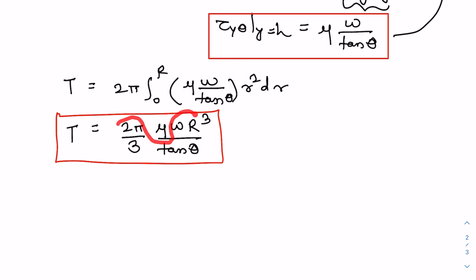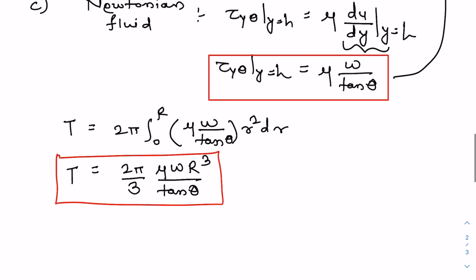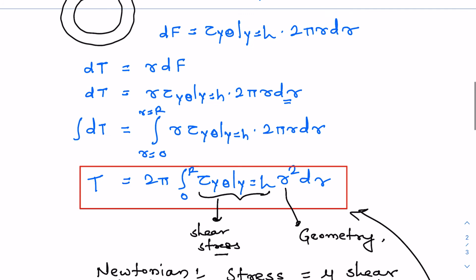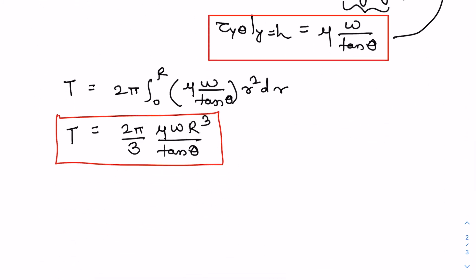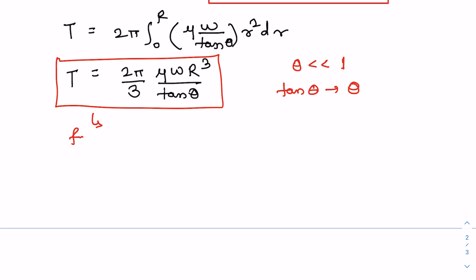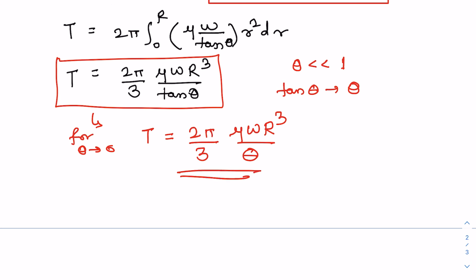On the right-hand side, R and theta are fixed by the geometry. If we rotate the cone at constant omega and measure the torque T, we can solve for the dynamic viscosity μ. Since theta is small, we can use the approximation tan(theta) ≈ theta, so the torque simplifies to T = (2π/3) · μ · omega · R³ / theta. That is the basic principle of operation of a cone and plate rheometer.